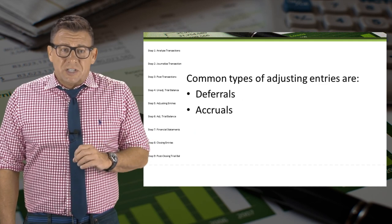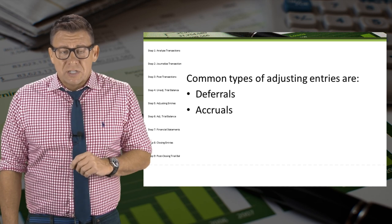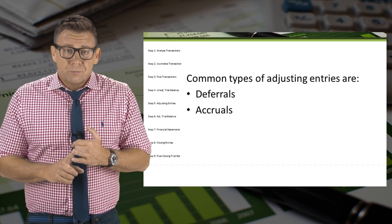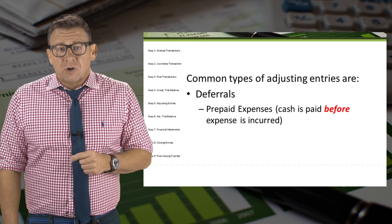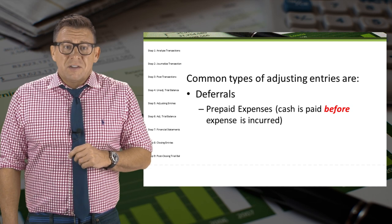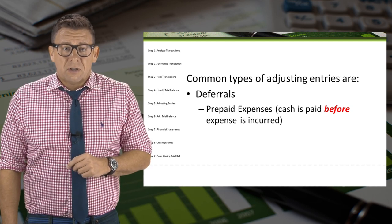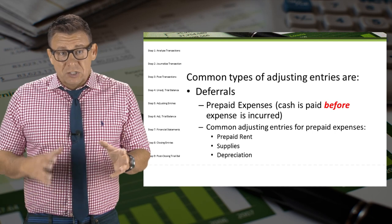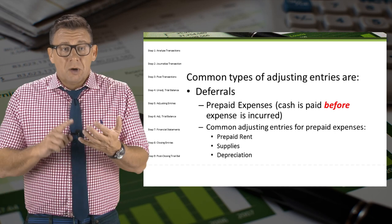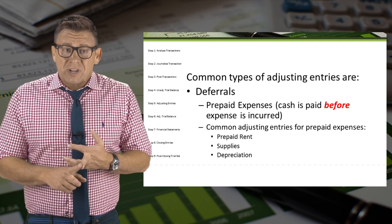When we make adjusting entries, there are two main types of subcategories: deferrals and accruals. One type of deferral is prepaid expenses. This means that cash is paid before the expense is incurred. Some common examples of adjusting entries for prepaid expenses are prepaid rent, supplies, and depreciation.